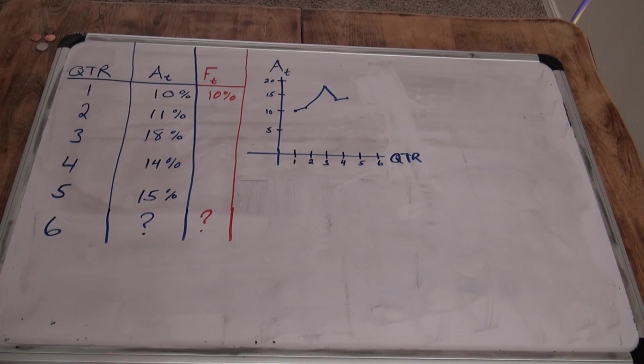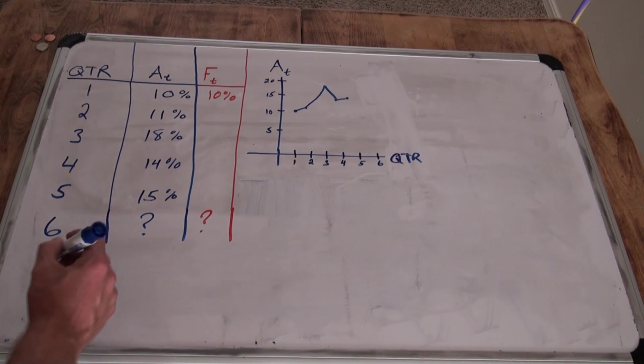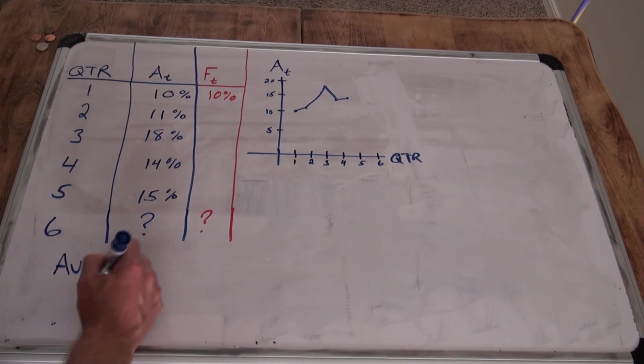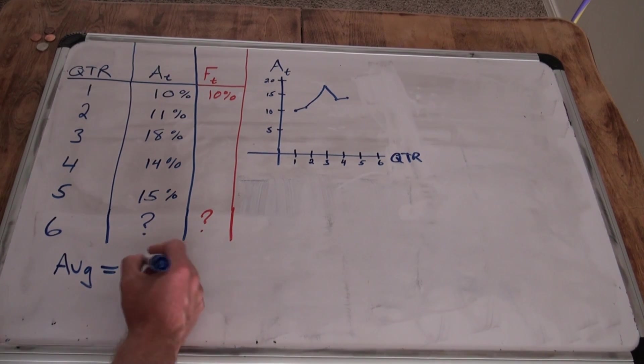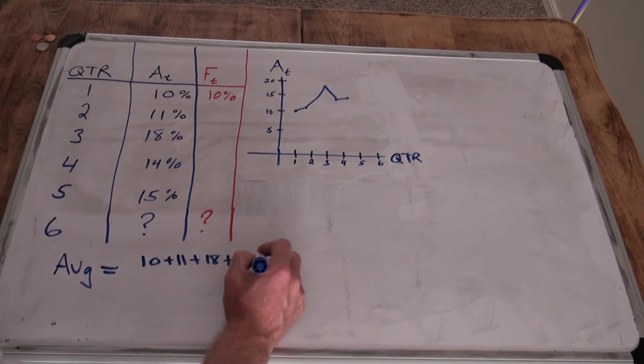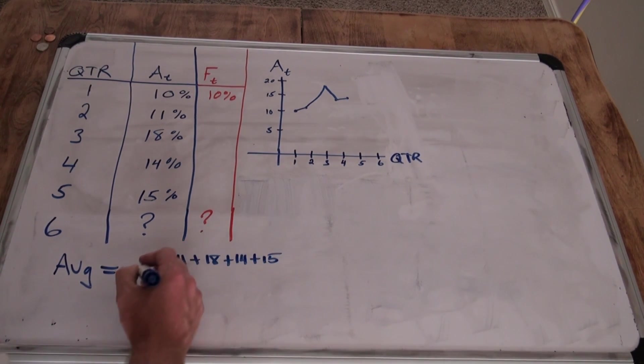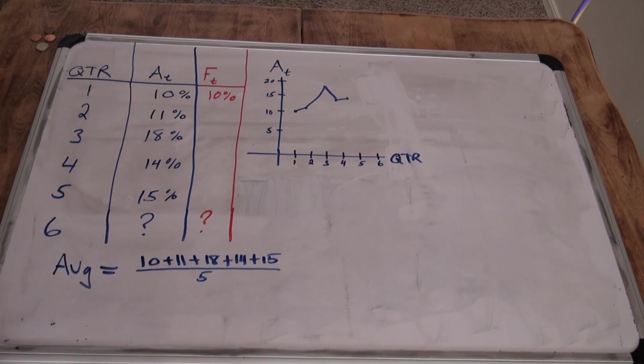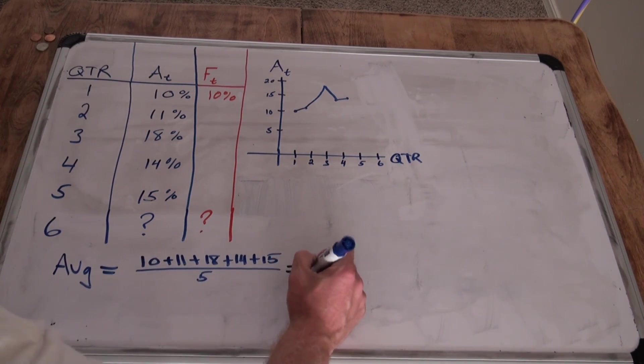It's very sporadic. There's no real rhyme or reason to what the next one should be. So our first take at it will be, let's take the average of the 5 quarters that we do know. So the average is simply the actuals divided by the number of periods. So it would be 10 plus 11 plus 18, 14, and 15 divided by 5. So that equals 68 divided by 5, which amounts to 13.6.